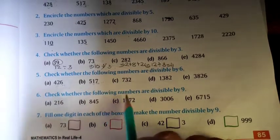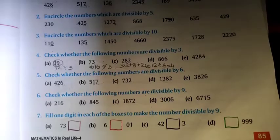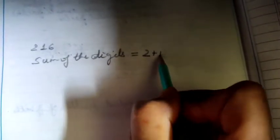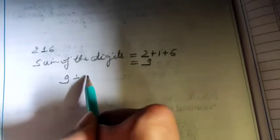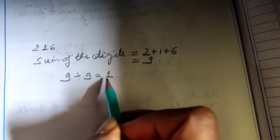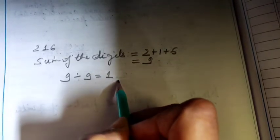Next question: check whether the following numbers are divisible by 9. The rule of divisibility by 9 is that if the sum of the digits is divisible by 9, then the number is divisible by 9. For 216: the sum of the digits is 2 plus 1 plus 6, which equals 9. Since 9 divided by 9 gives 1 with no remainder, we can say 216 is divisible by 9.